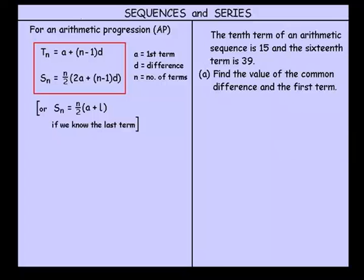Now, the 10th term of an arithmetic sequence is 15, and the 16th term is 39. And we're asked to find the value of the common difference, the D, and the first term, which is A. Well, because we're talking about terms, we'll write down our term formula.